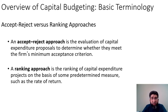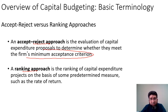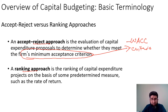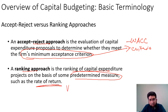Once we have capital rationing and projects competing with each other, the criteria is the accept-reject approach versus the ranking approach. The accept-reject approach evaluates capital expenditure proposals to determine whether they meet the firm's minimum acceptance criteria, such as weighted average cost of capital. The ranking approach ranks capital expenditure projects on the basis of some predetermined measure, such as the rate of return.